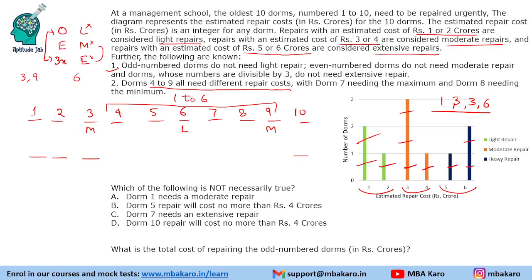DOM 3 and DOM 9 require moderate repair, so their cost is 3 crores. DOM 10 is even, so it does not need moderate repair — it will need 1 or 6 crores. DOM 2 is also even, so it does not need moderate repair. That means among the values 1, 3, 3, 6: the two 3s go to the odd DOMs (1 and 3), and the even DOMs (2 and 10) take 1 and 6.